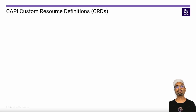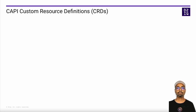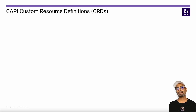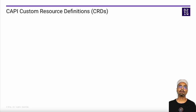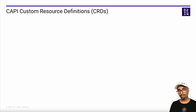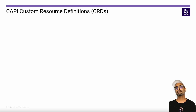There are a bunch of custom resources that CAPI uses and each one of them has a ton of parameters. This might seem a little overwhelming when you see it for the first time, but they are not really that complicated when you understand the flow of things. Because in the end, all we are doing is using these custom resources as templates to provide the specs for the infrastructure and the specs for the Kubernetes cluster. I put together a simple diagram to make it easy to understand how all of this fits together.